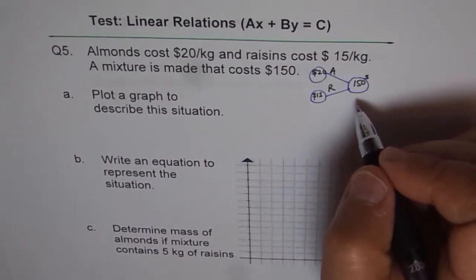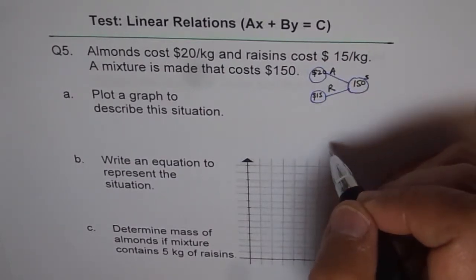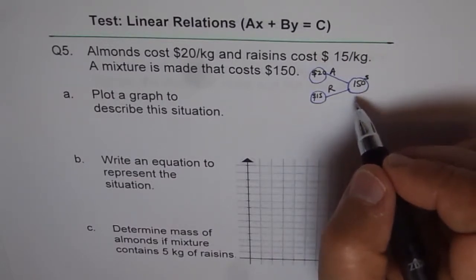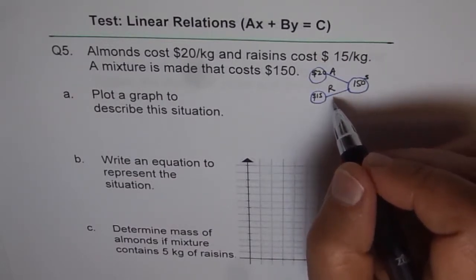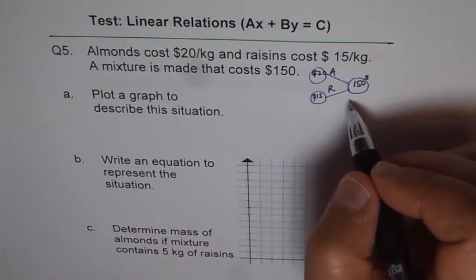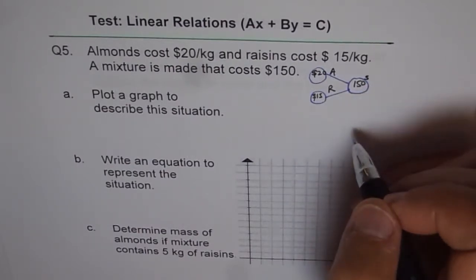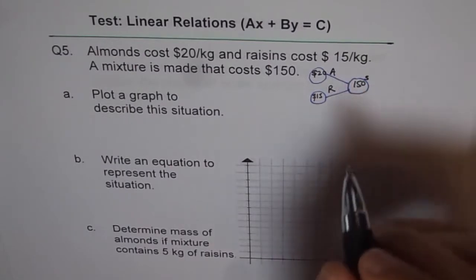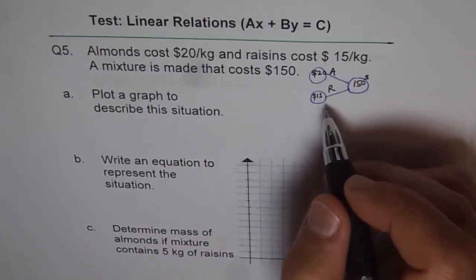So that means we have to find how much of A is added to this mixture, and how much of R, the raisins, have been added to the mixture, so that we get a cost of $150. Now, therefore, from here, we can write down our equation.